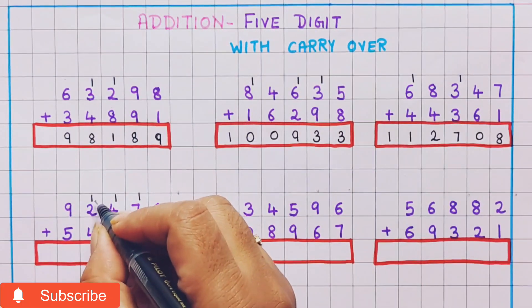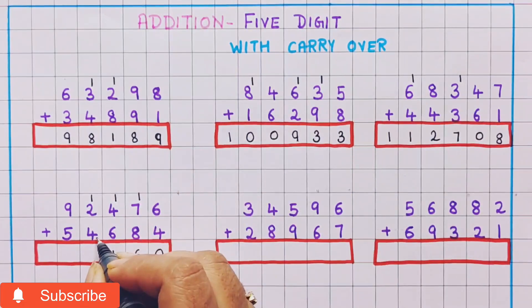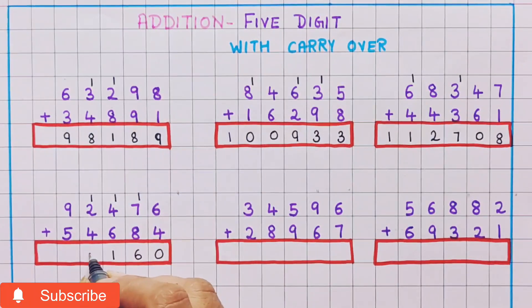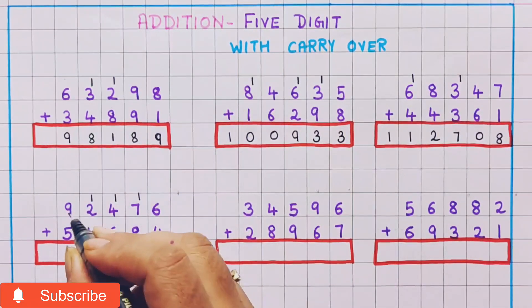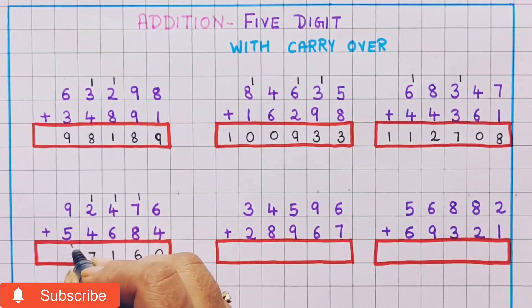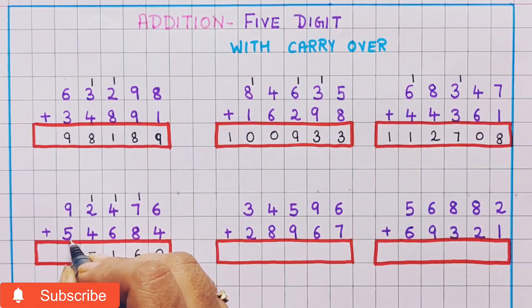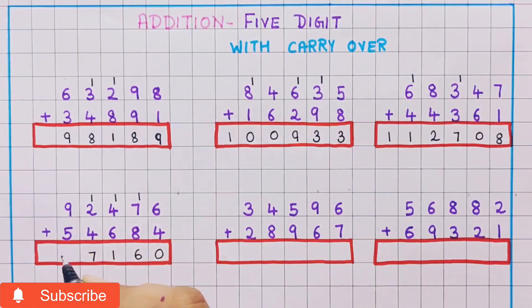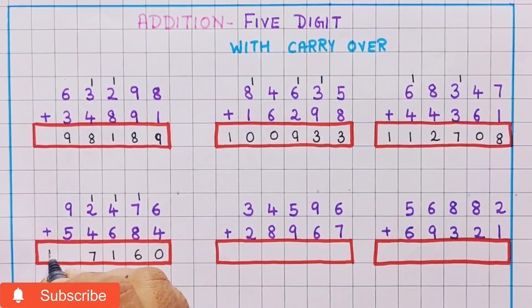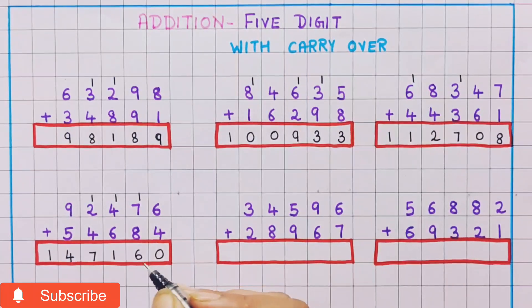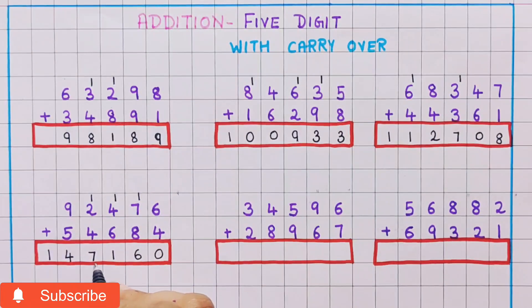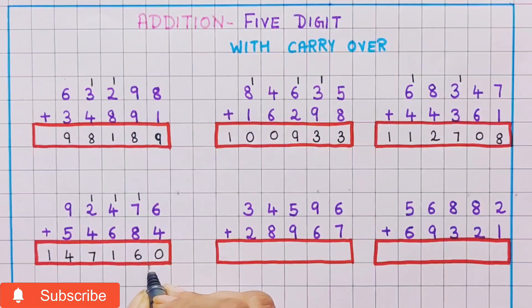Now 2 plus 1 is 3, and 3 plus 4 is 7, so I will write 7. Now 9 plus 5 is 14, so I will write here 1 and 4. So the answer is 1,47,160.